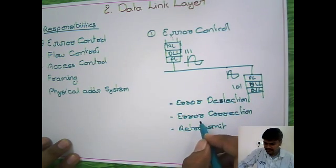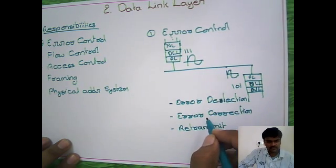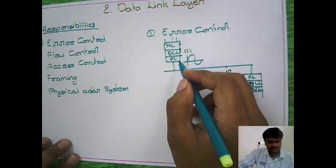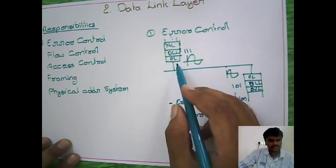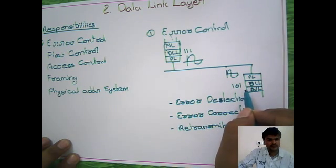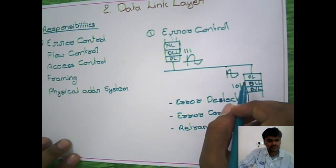Then after that, if possible, you have to correct it through error correction. If it's not possible, then it has to give a negative acknowledgement to the source, which will say that whatever data the source sent to the destination has not reached properly. This is the functionality of error control.